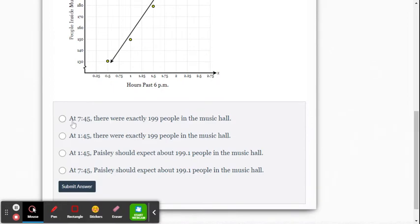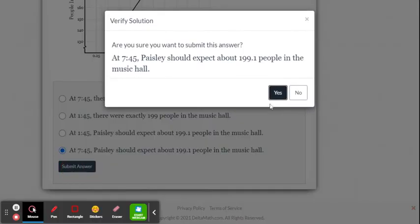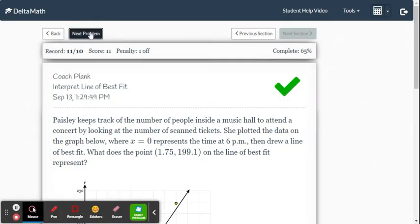So at 7:45, we would expect 199.1 people in the music hall. That's going to be our best answer. Submit it. Good. Look at this next one.